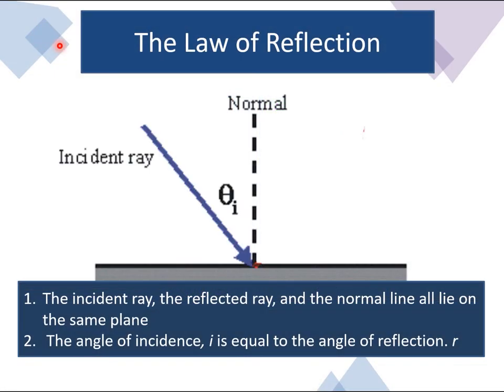Light reflected obeys the law of reflection. The law of reflection states that the incident ray, the reflected ray, and the normal lies on the same plane. The angle of incidence, I, is equal to the angle of reflection, R.